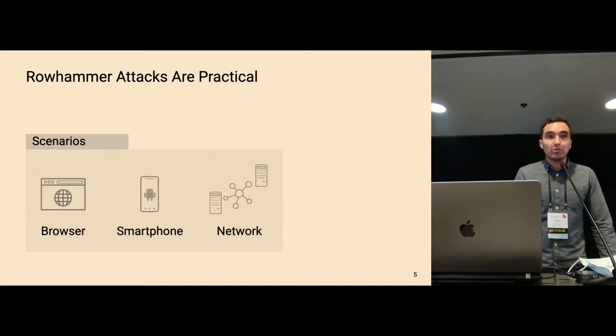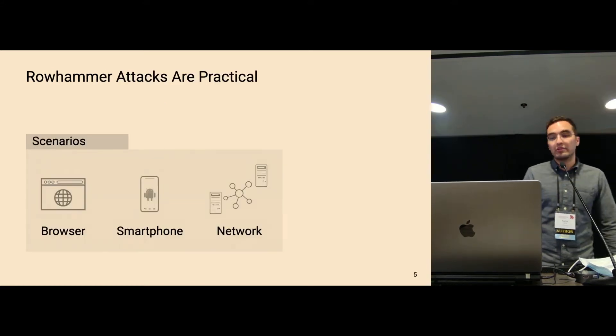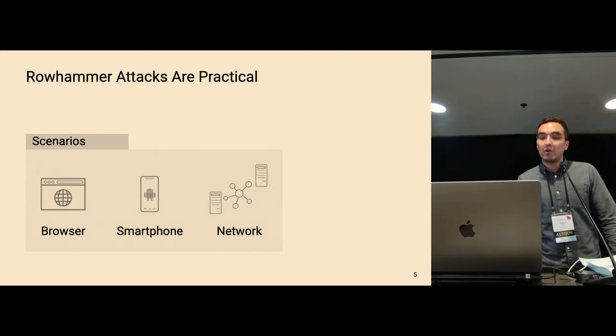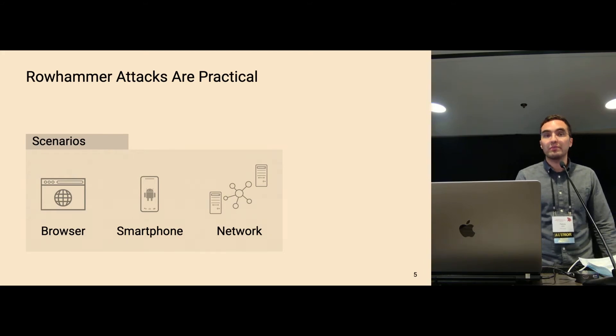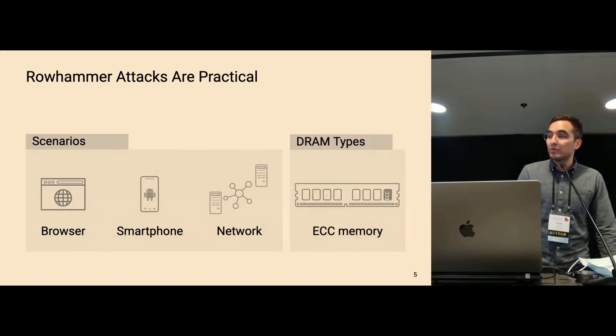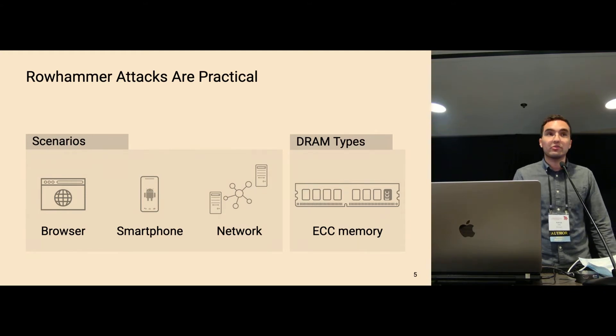It has been shown that row hammer attacks are very practical in many different scenarios. For example, row hammer is possible in the browser via JavaScript, on smartphones, and even over the network. It has also been shown that devices that use error-correcting codes are vulnerable against row hammer.